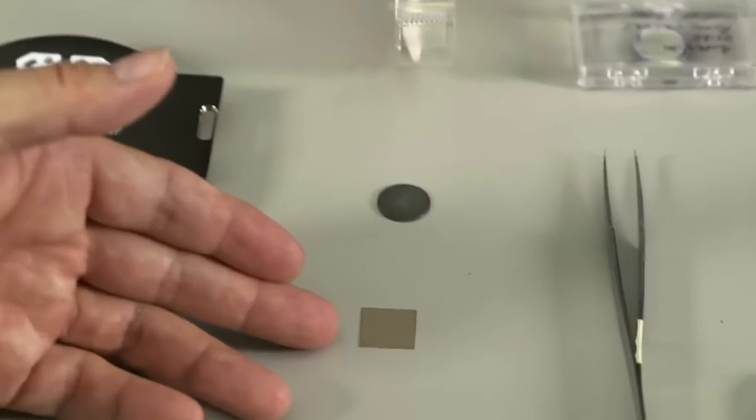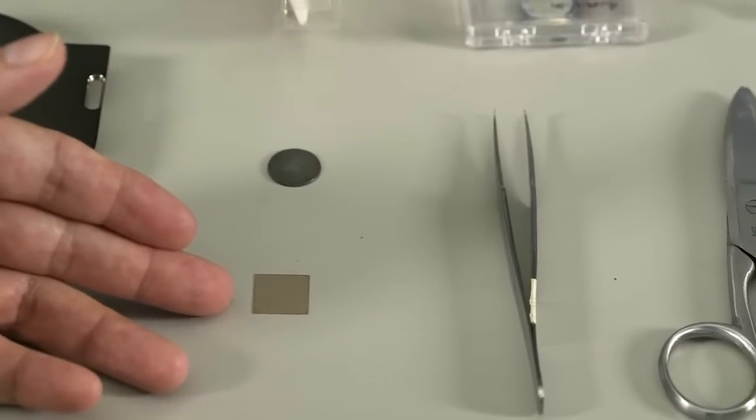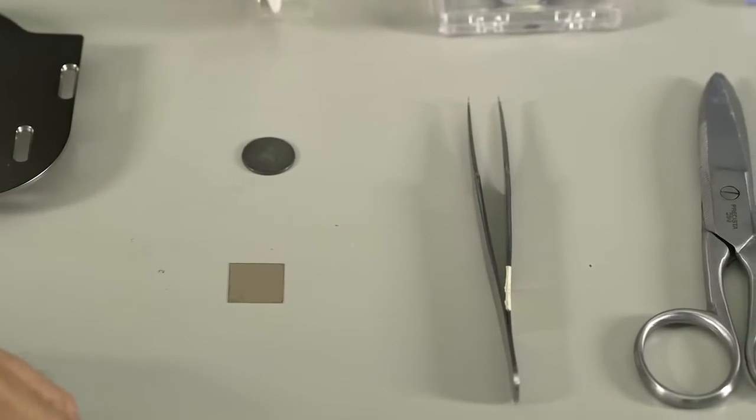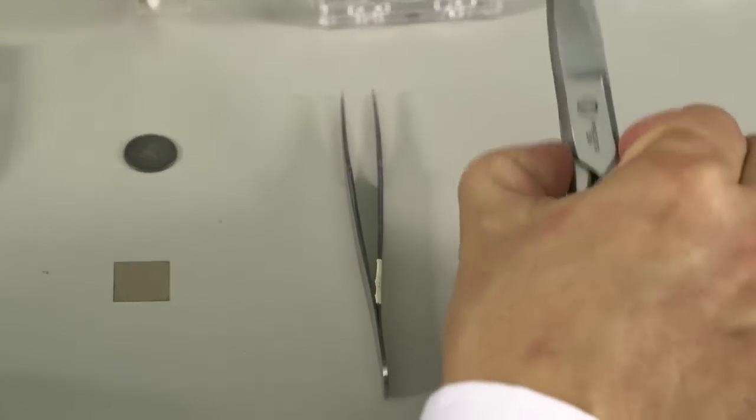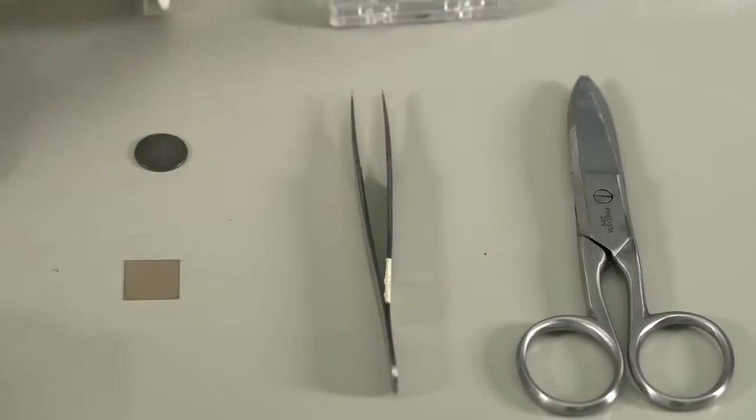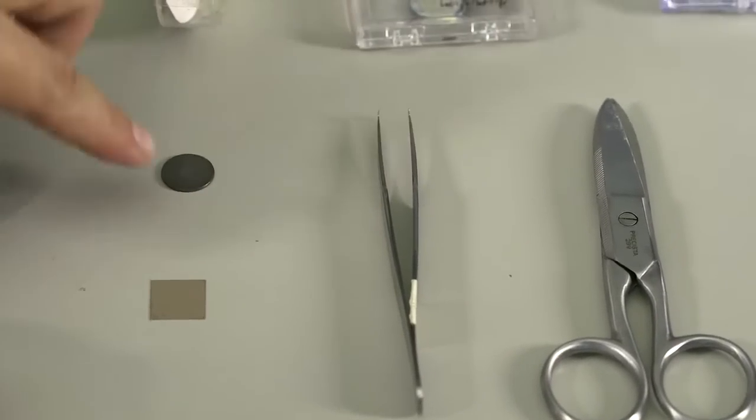This piece of mica is going to be the sample today. We're also going to need a tool, such as a pair of tweezers, a pair of scissors, and we also need double-sided tape and a steel sample dish.